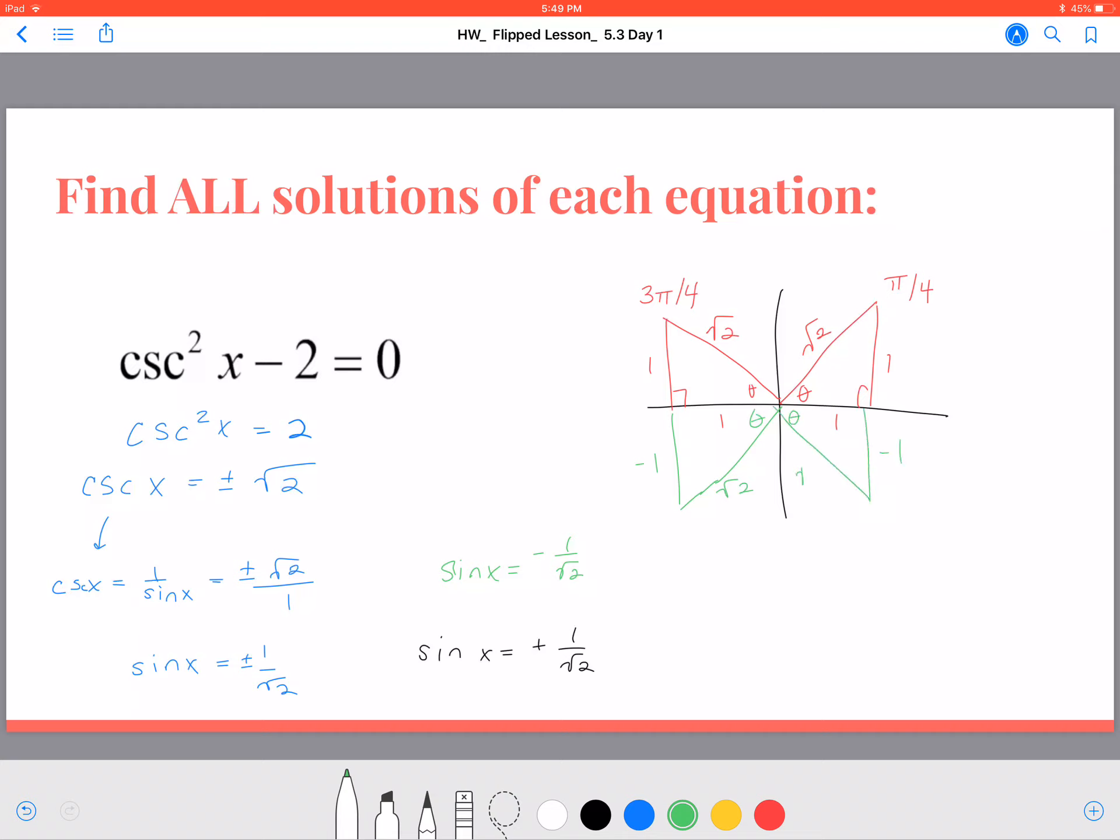So we know also in our solution set is 5 pi over 4 and 7 pi over 4. Now, yes,